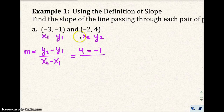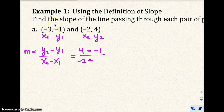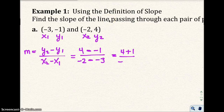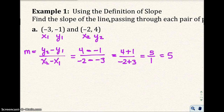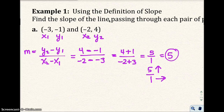All over x₂, which is always minus x₁, which is negative 3. That gives 4 plus 1 — because subtracting a negative gives plus — over negative 2 plus 3, which is 5 over 1, equaling 5. I like to think of this as 5 over 1 because it tells you from point to point you go up 5 units and run to the right 1 unit.